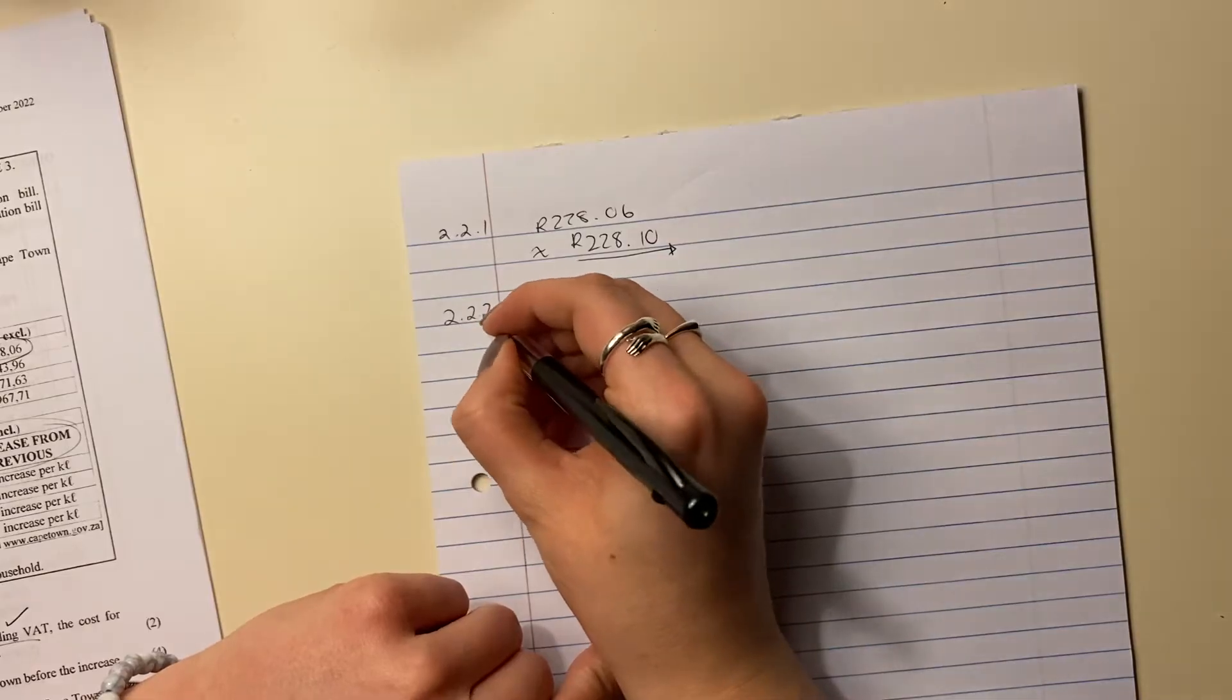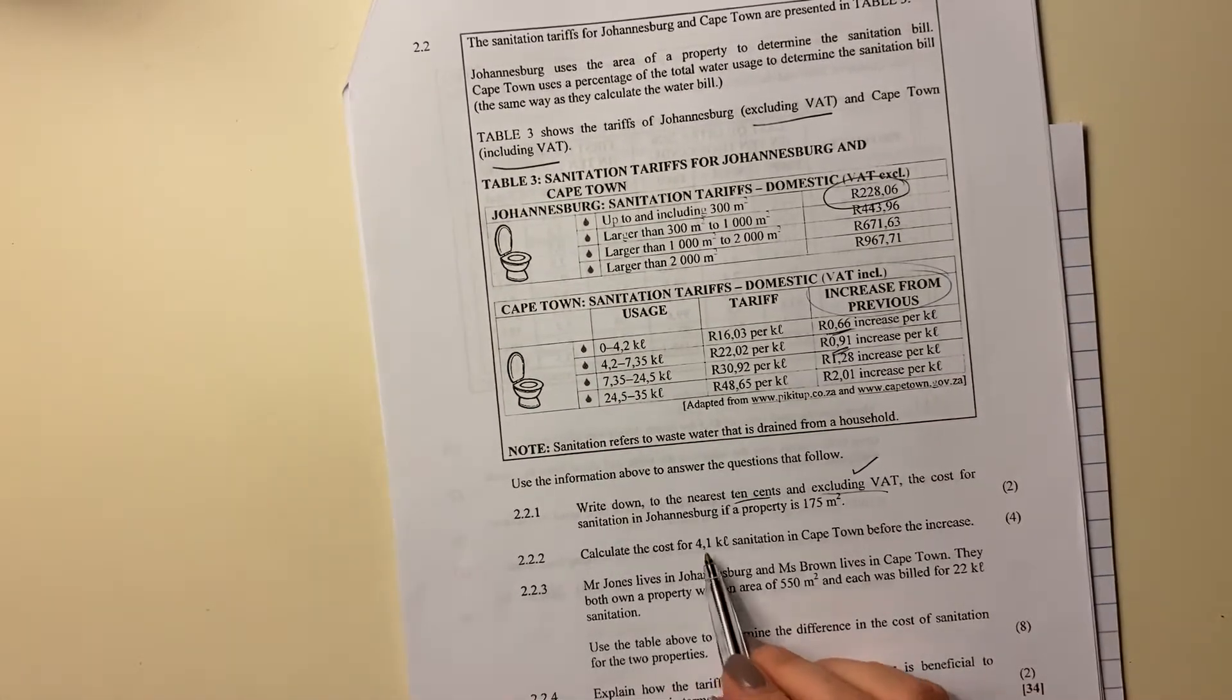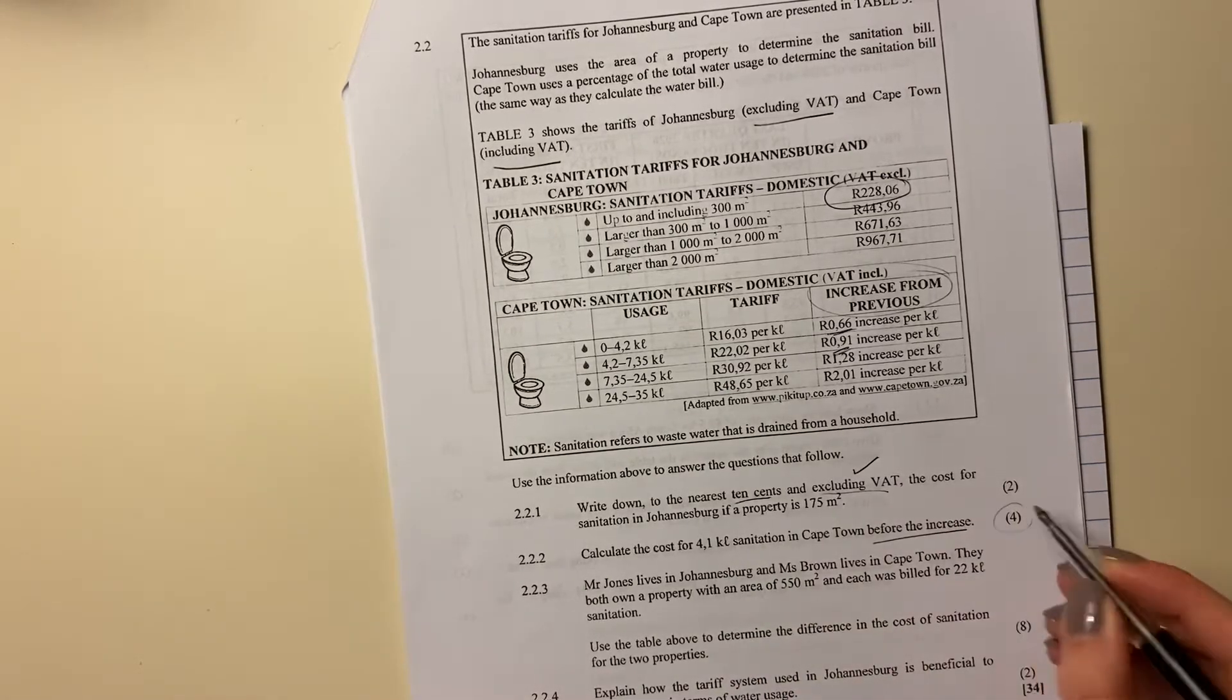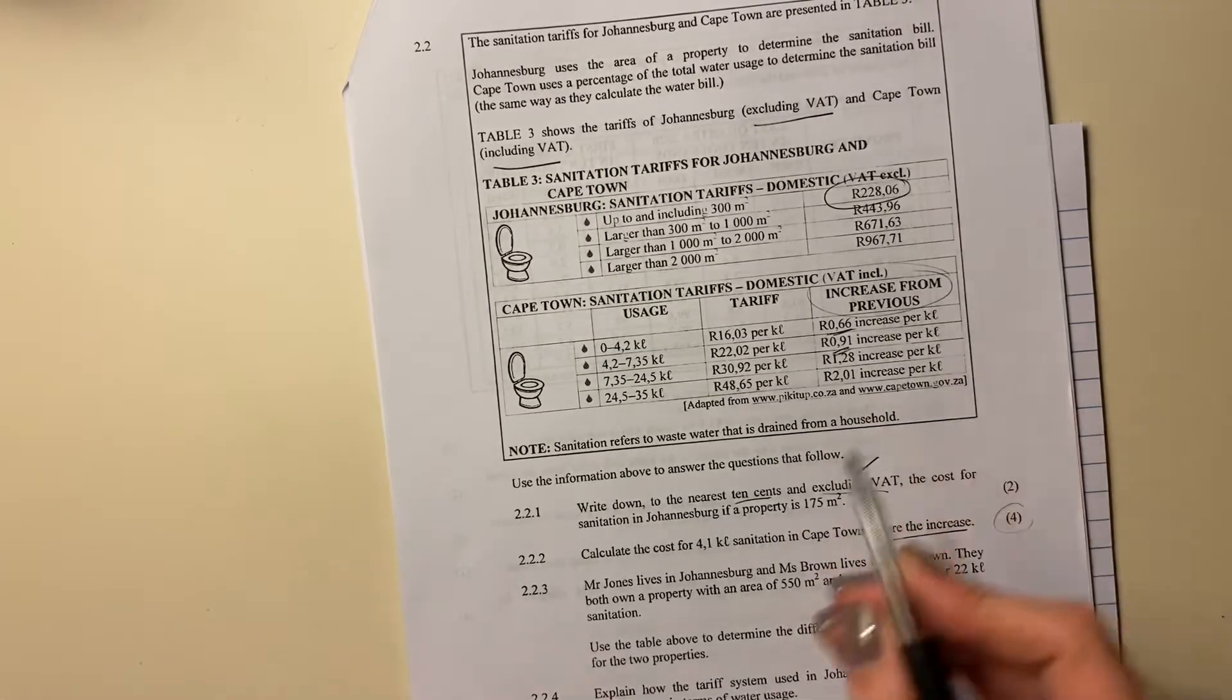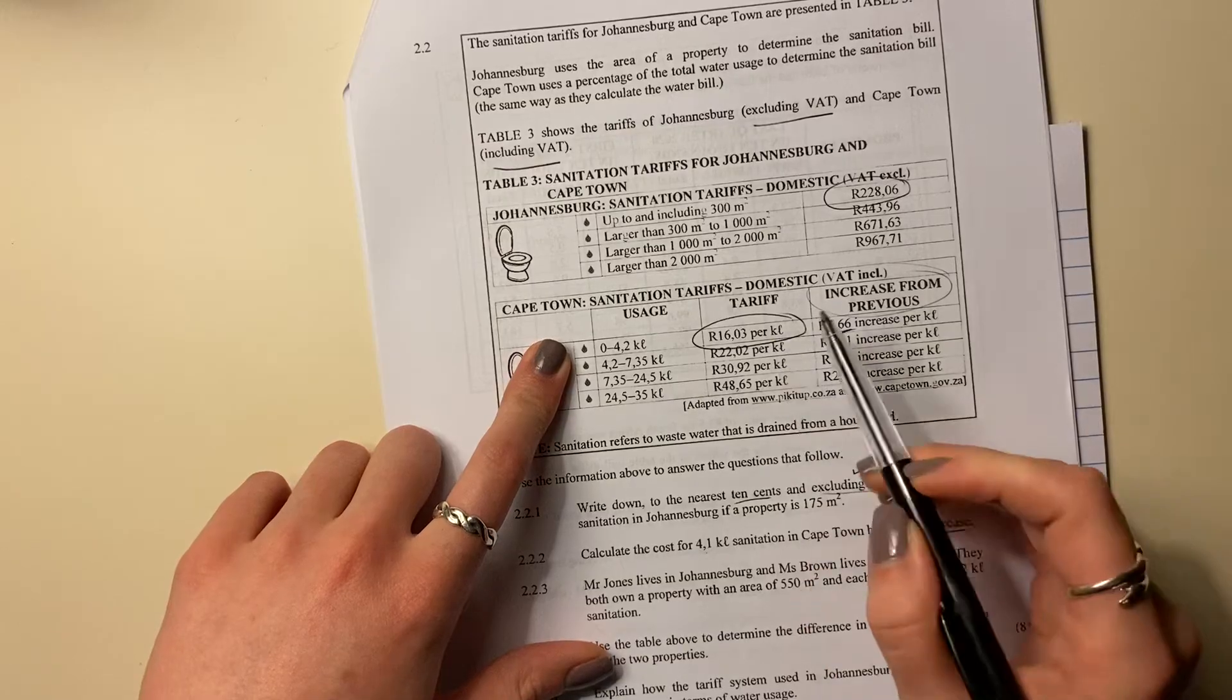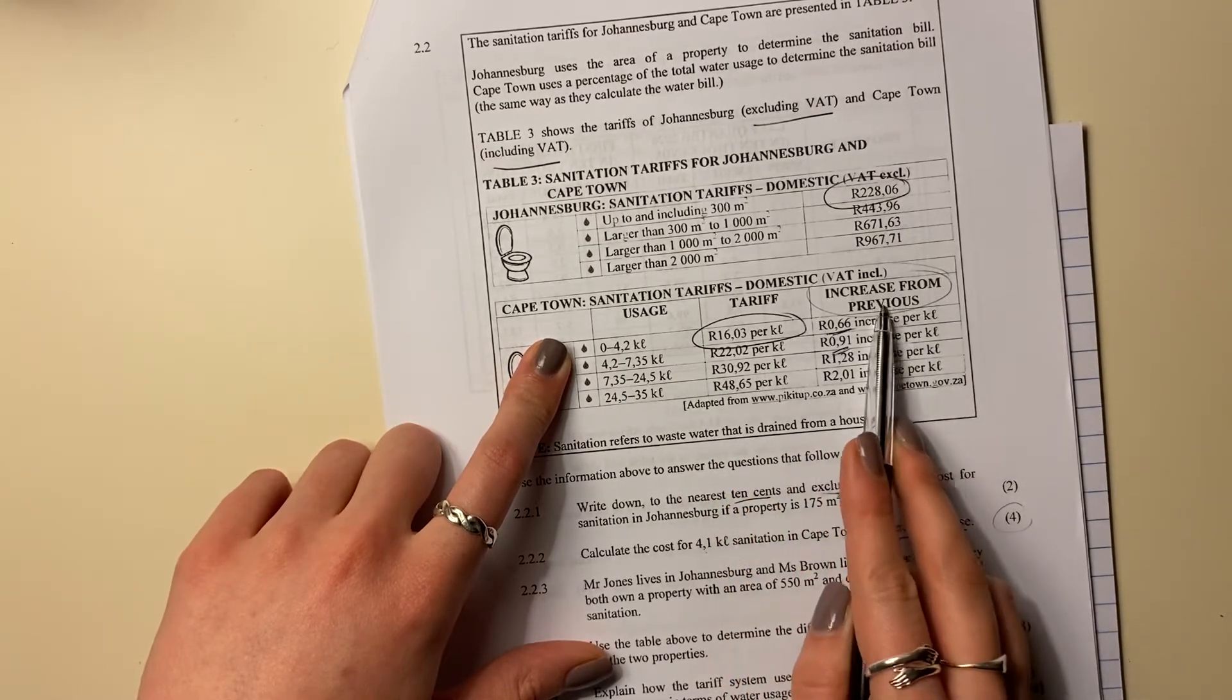Let's now go on to the next question. It says calculate the cost of 4.1 kiloliters sanitation in Cape Town before the increase. It's four marks, quite a lot of marks, but what we're going to have to do is take into account this increase. So 4.1 fits into that first category. So we know that we're sitting here. Remember it says per kiloliter. So we're going to times this amount by 16.03, but that was after the increase. We have to take into account the increase.